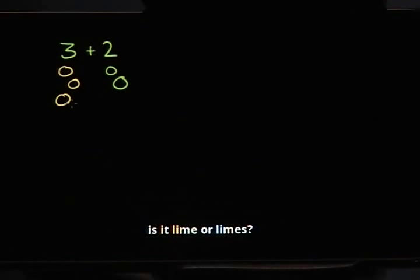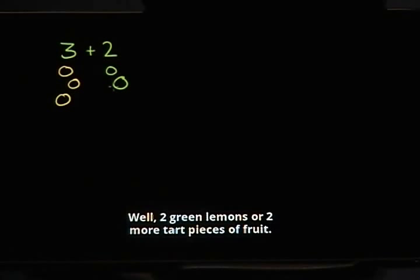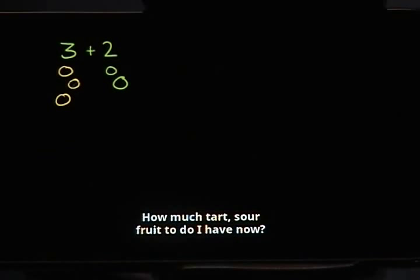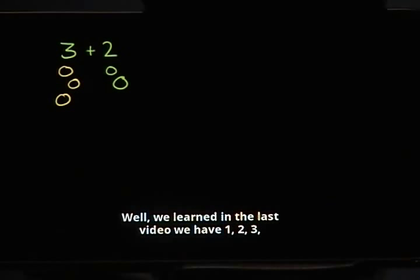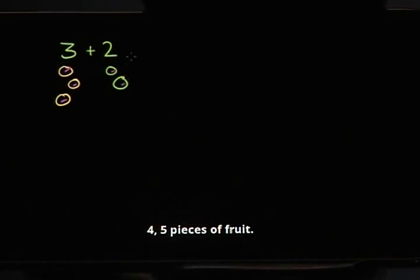And if I were to add to those 3 lemons maybe 2 limes — is it lime or limes? Let's just say 2 green lemons or 2 more tart pieces of fruit. How much tart, sour fruit do I have now? Well, we learned in the last video we have 1, 2, 3, 4, 5 pieces of fruit.